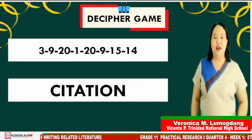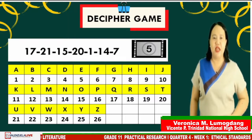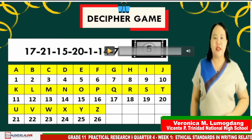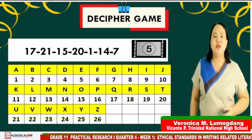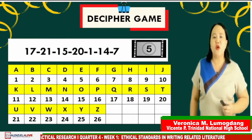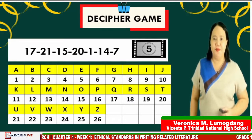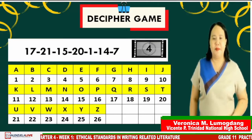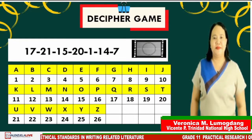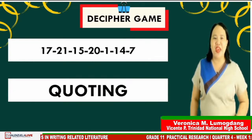Next numbers are 17, 21, 15, 20, 1, 14, 7. Clue: this is using the exact words of the author, using quotation marks. Go! If your answer is 'quoting,' very good!